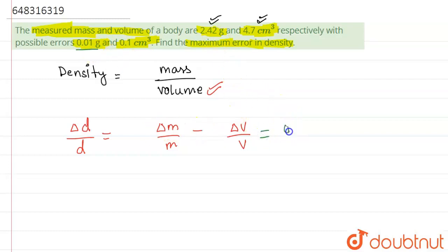Divided by m. So basically this will become equal to delta m is what? Delta m we take it as 0.01 and m is 2.42, minus delta v is 0.1 and v is 4.7. So basically if you remember, this we take it as v and this we took it as m, and the delta m is this and this is delta v.